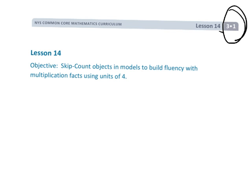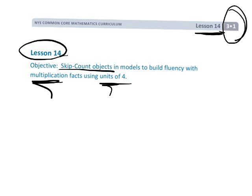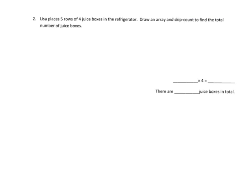This is Grade 3 Module 1 Lesson 14. In Lesson 14 we're going to skip count and continue working on our multiplication facts, specifically our fours. Lisa places five rows of four juice boxes in the refrigerator.